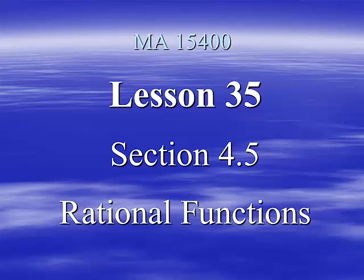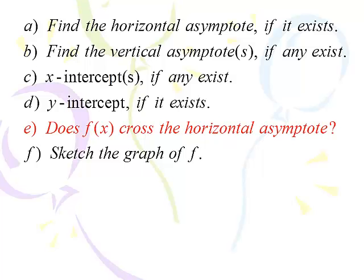Here we go with Lesson 35. This is our second out of three lessons on section 4.5 where we're graphing rational functions. We're adding one more step that we didn't do in the previous lesson, Lesson 34. We're going to ask this question: does f of x cross the horizontal asymptote? Not the biggest deal in the world, but it would be nice to know.